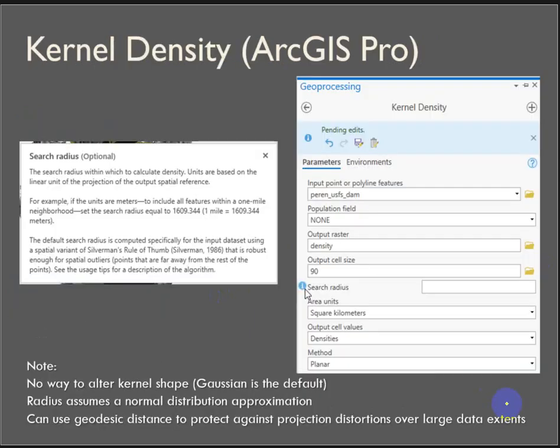Okay. So in ArcGIS Pro Gaussian is the default kernel shape, and there isn't a way to change this that I know of. There are other tools for running kernel density, and maybe a Python script would allow you to fix that. But you can change the search radius. And if you click on this to read about the search radius, it explains here how it's calculated.